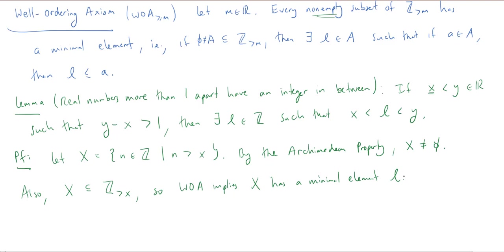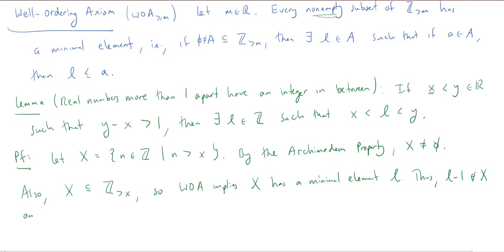Now, if l is the smallest element in X and I subtract one from it, I get a new number which is no longer in X. Thus l minus 1 is not an element of X. Because it's not in X but it is an integer, it cannot be greater than x. So l minus 1 must be less than or equal to x — if it were greater than x, it would be in the set X.